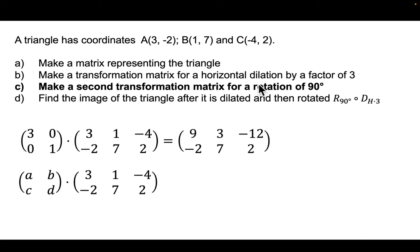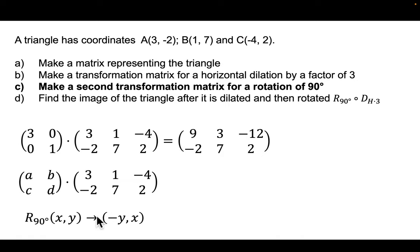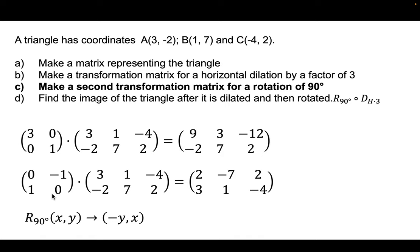Next, we want to rotate the triangle by 90 degrees. A 90-degree rotation takes (x, y) to (-y, x), so (3, -2) becomes (2, 3), (1, 7) becomes (-7, 1), and (-4, 2) becomes (-2, -4). The transformation matrix is [0, -1; 1, 0] — the same matrix as before. The fact that we have more points doesn't impact the transformation matrix itself. The same transformation matrix applies.